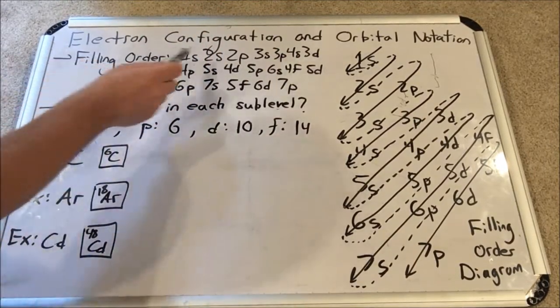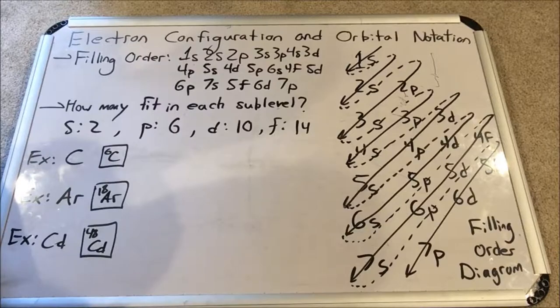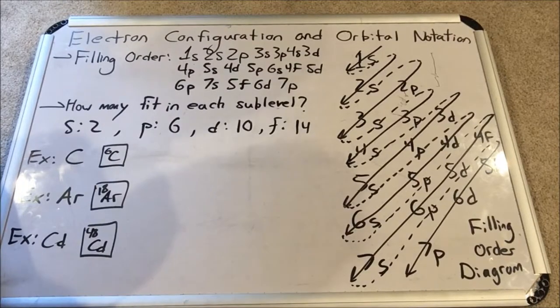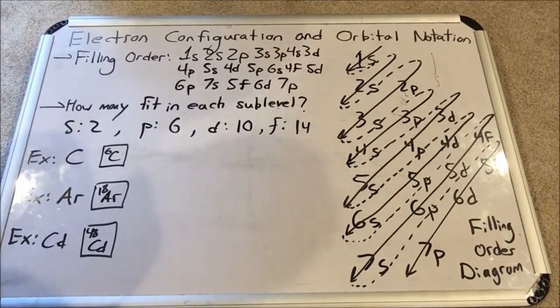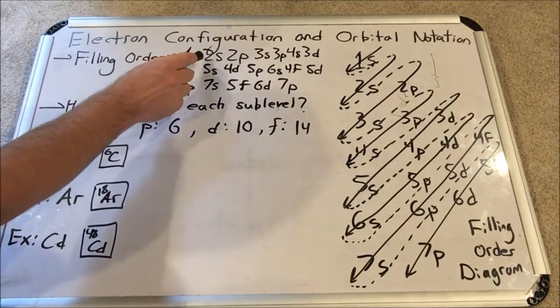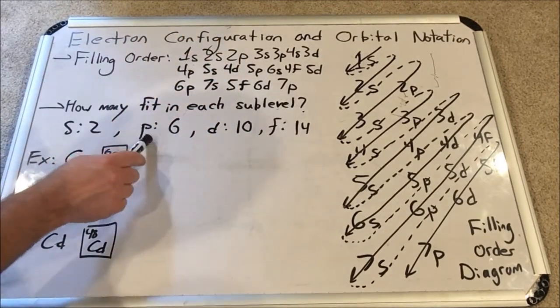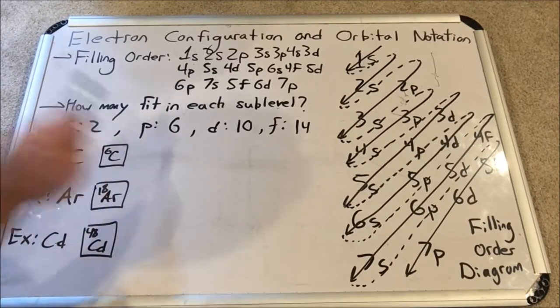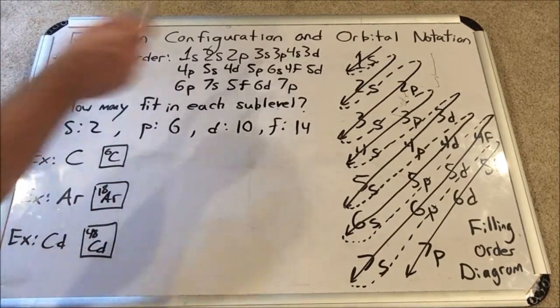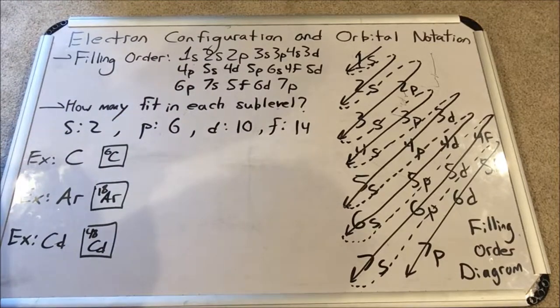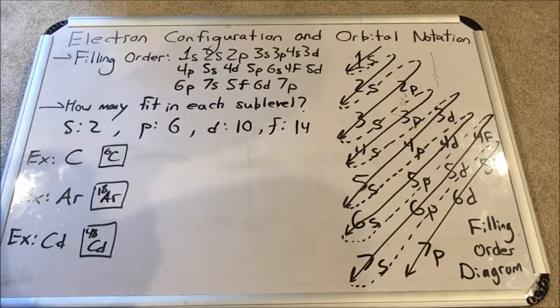Next, we will begin with the second principal energy level and we will fill that up entirely. The principal energy level number 2 has an S sublevel and a P. It has an extra sublevel, P. So the principal energy level 2 has S and P sublevels. They will fill in that order. Then we're done with principal energy level 2.